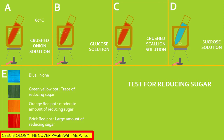A brick red precipitate suggests that there is a large amount of reducing sugar. The precipitate is formed as the Benedict's solution reacts with the contents of the tube to form a solid product we call a precipitate. The Benedict's solution is blue because of the copper ions present. For the sucrose solution, it has not changed — it maintained the color of the Benedict's solution.